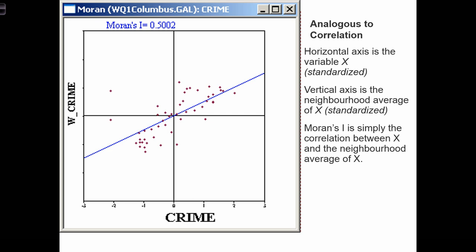In this scatterplot, the horizontal axis is the variable x, our data values. The only thing here is that we've standardized them into z-scores using the normal formula, z equals x minus x-bar over s.